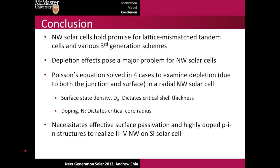In conclusion, I've shown that nanowire solar cells hold the promise for lattice mismatched tandem cells and various third-generation schemes, but depletion effects pose a major problem because of the small size of the nanowires. What we did was we solved Poisson's equation in four cases, and the main conclusion was that the surface state density dictates the critical shell thickness. The lower the density you go or the better passivated it is, the smaller shell you can use. And the doping dictates the critical core radius. The higher doping you go, the smaller radius you can go before it gets fully depleted.